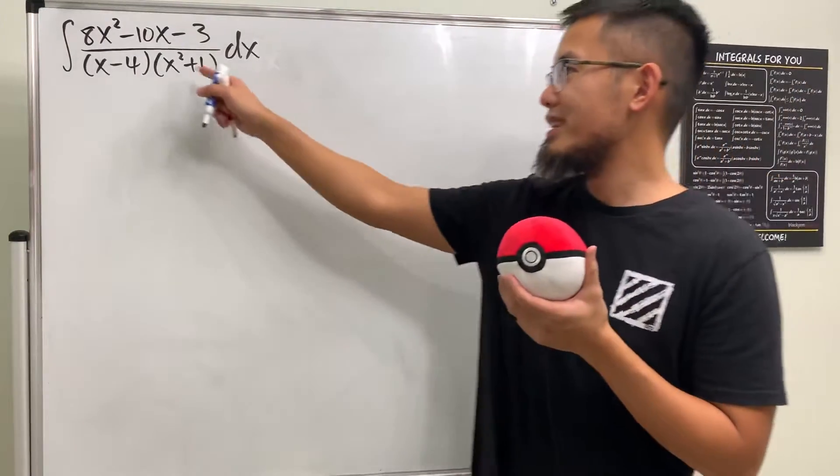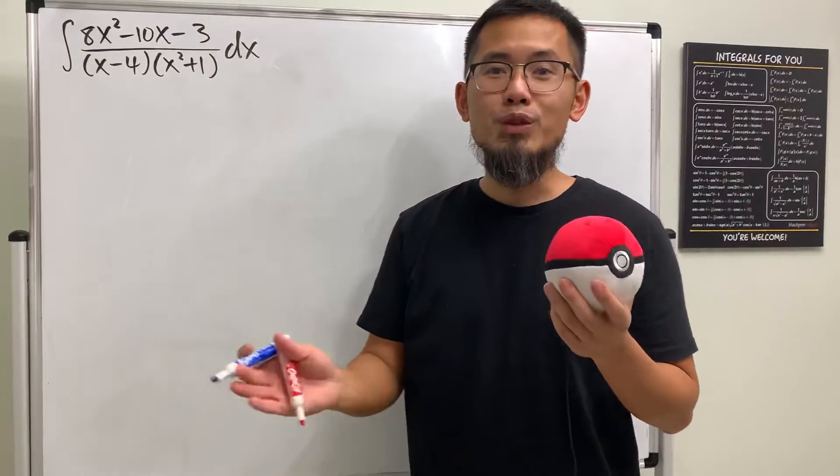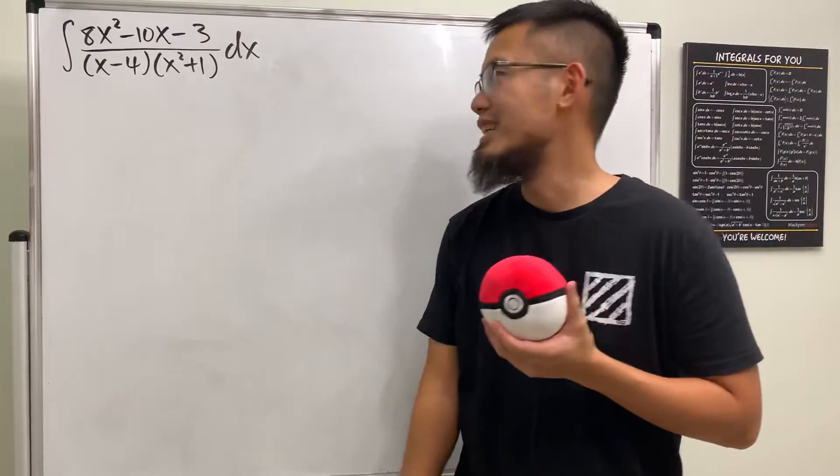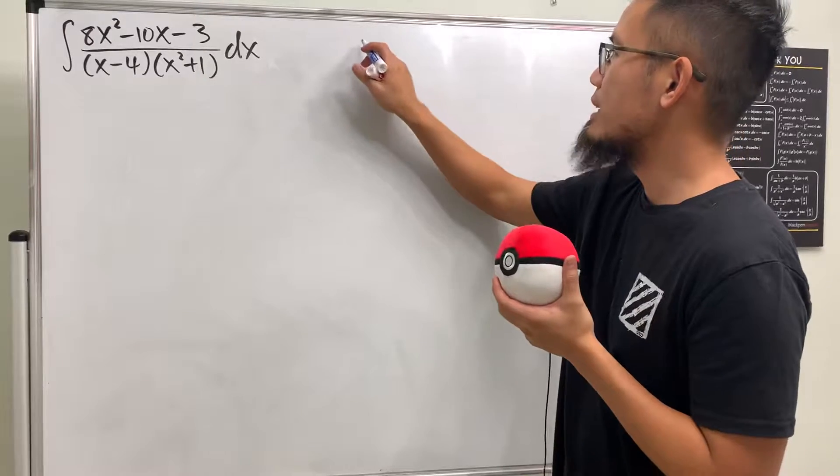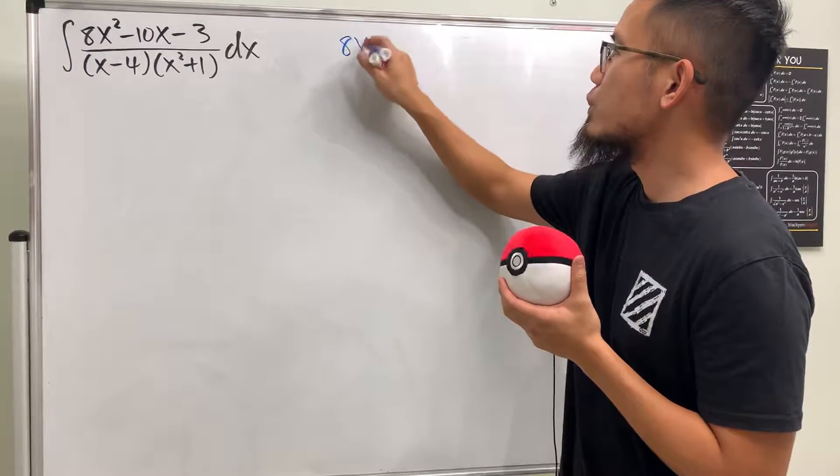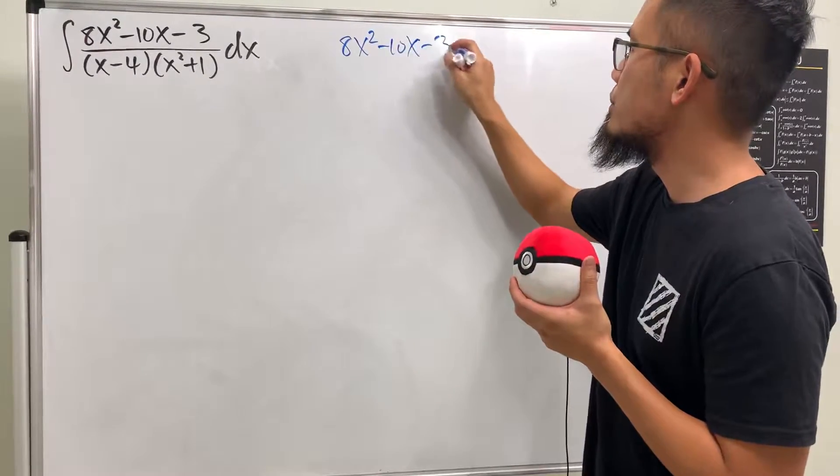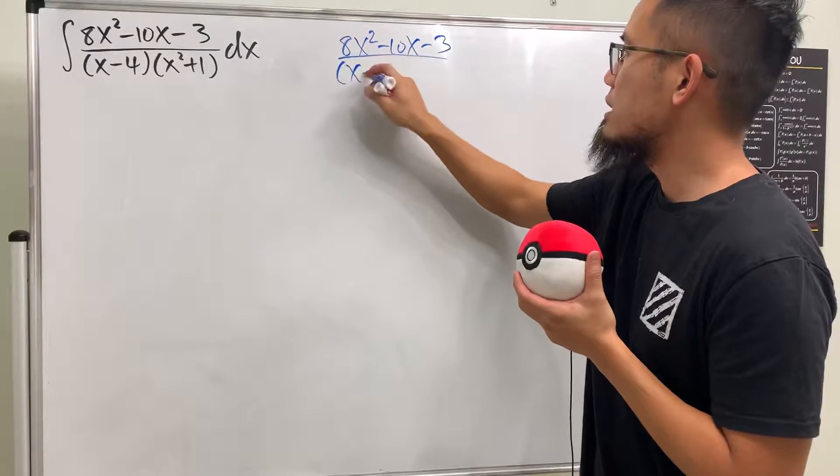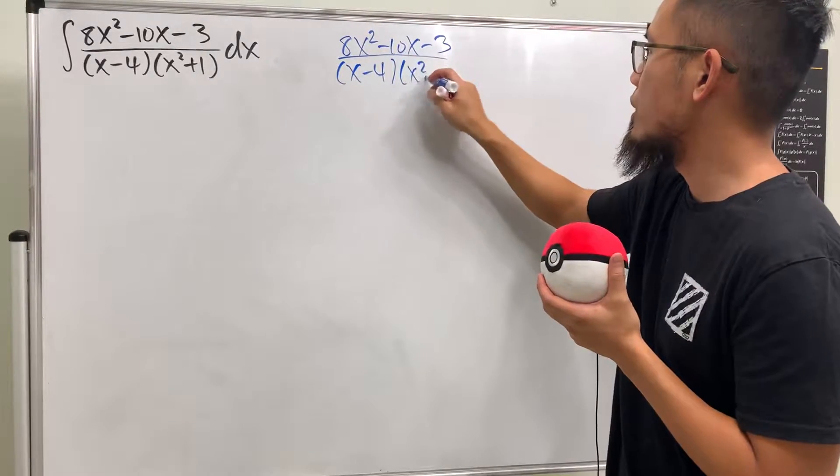Ladies and gentlemen, we will be integrating this rational function here and we will use the partial fraction method. Here we have 8x² - 10x - 3 over (x - 4)(x² + 1).